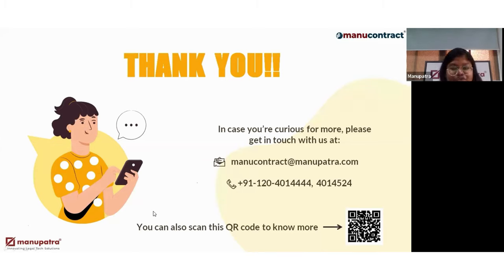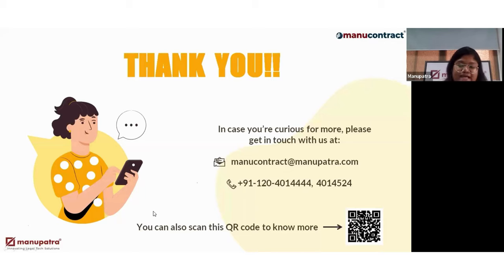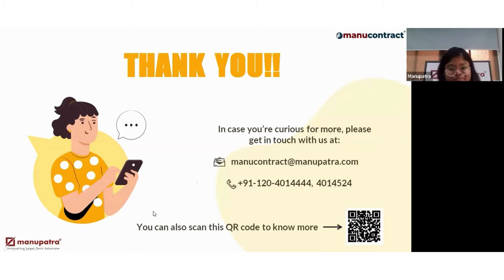Can multiple people review and approve or reject the contract simultaneously? Yes, they can. The workflow allows you to create as many levels as you want and include as many people as you want. You can keep two different people at the same level with the same task, or keep the same task at two different levels with two different people. You can customize the entire workflow as per your preference. Is there use of Gen AI in the software? No, not currently.